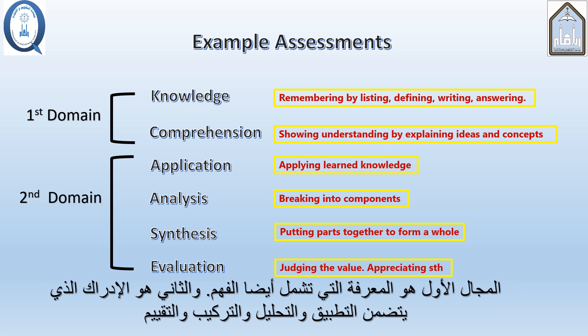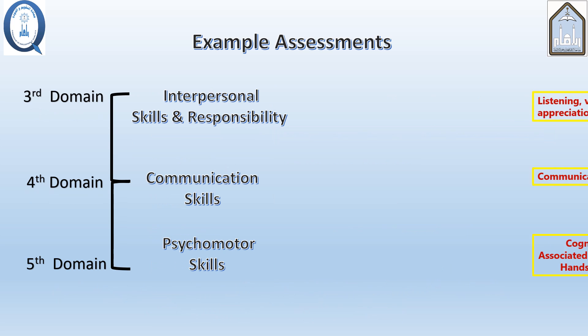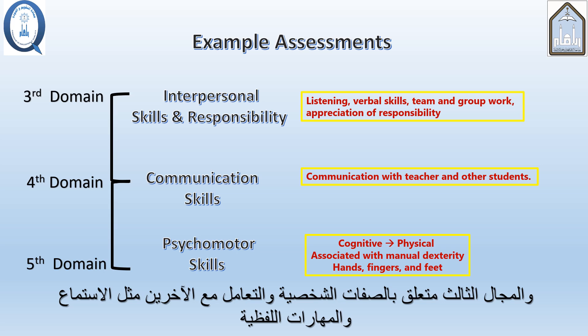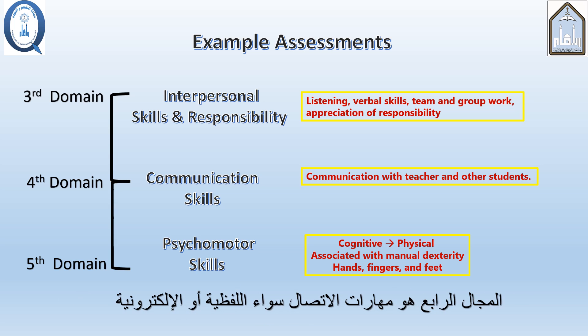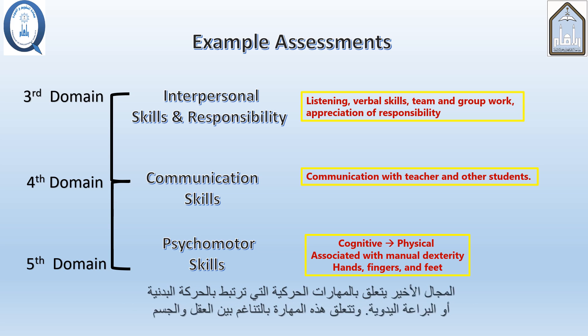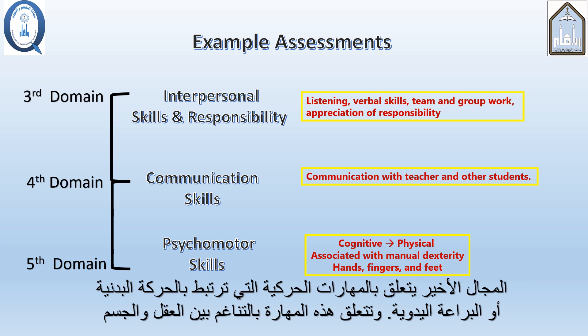The first domain is knowledge, which also includes comprehension. The second is cognition, which includes application, analysis, synthesis, and evaluation. The third domain is interpersonal skills and responsibility, such as listening and verbal skills. The fourth domain is communication skills, whether verbal or electronic. The last domain has to do with psychomotor skills, which are associated with physical movement or manual dexterity and involve mind-body coordination.